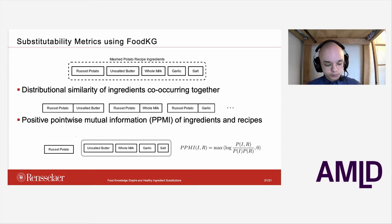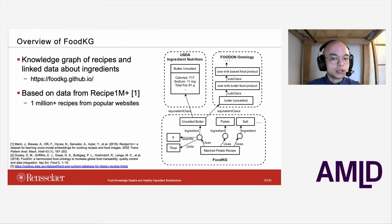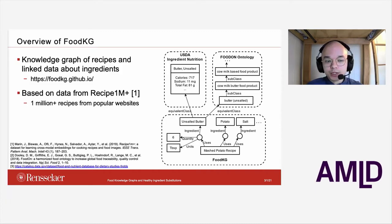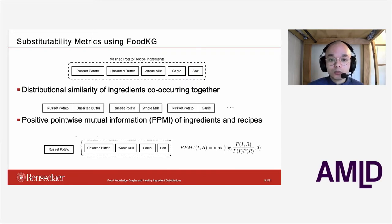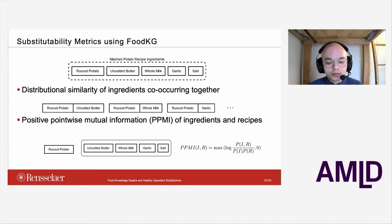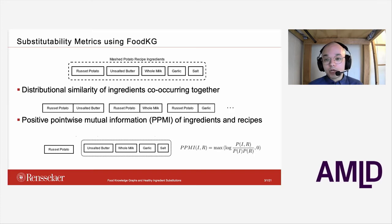Mutual information, sometimes utilized in natural language processing, intuitively gives an idea of how meaningful it is to see two pieces of information together. In our example, how meaningful is it to see the ingredient potato compared to the rest of the recipe containing butter, whole milk, garlic, and salt? Seeing potato in this kind of recipe is more meaningful than seeing salt, because salt is used so broadly across many other recipes and thus contains less information. Additionally, using our links to the FoodOn ontology and its subclass information about ingredients, we can better generalize ingredients when computing these similarity metrics — for example, inferring that russet potato is paired with a type of cow milk butter food product, and with a type of cow milk-based food product, from the subclass relations in FoodOn.